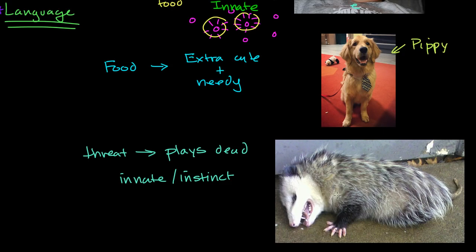You might say, what's the benefit of playing dead — it seems like it would be easy to catch? Well, other animals might not like eating things that are already dead, perhaps fearing disease or whatever else. So something in the evolutionary past of possums meant that the ones able to do this had a higher chance of not being killed, and therefore passed on their offspring. And so we now see this behavior in possums.